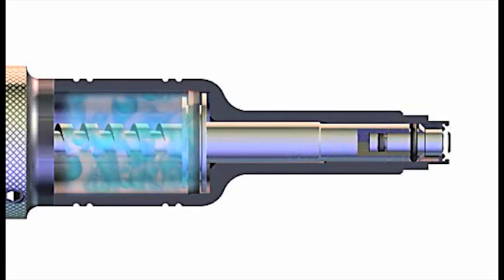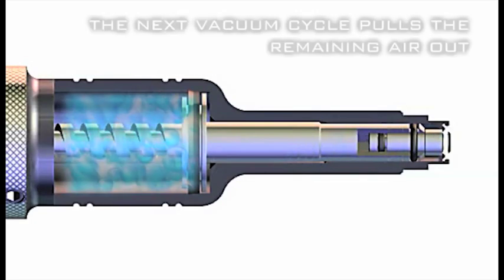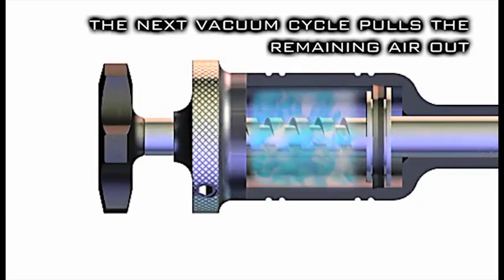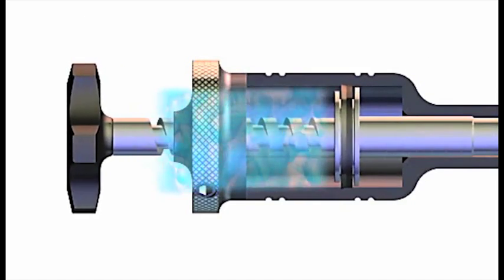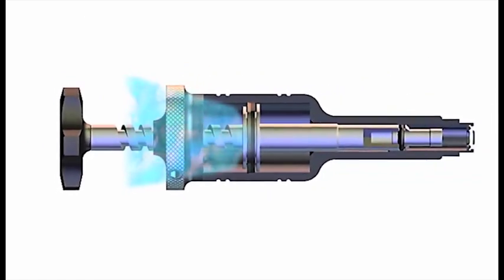Then on the next vacuum cycle, the air is pushed out of the injector body since it cannot pass the one-way collapsible seal. The air moves past the cap and through the piston threads to evacuate the injector.